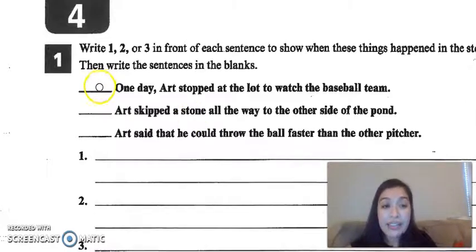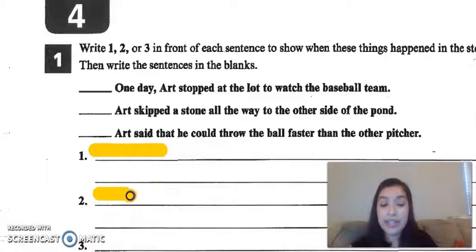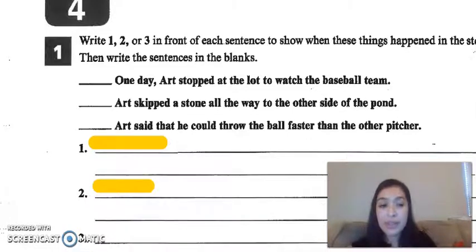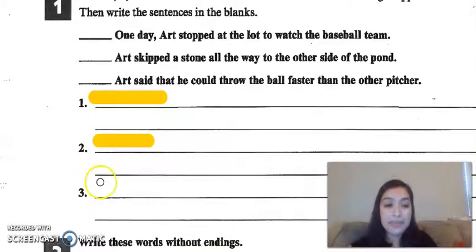Whatever sentence has a one next to it, you're going to write that sentence right here in lines one. Whatever sentence has a two next to it, you're going to write it here in two. And whatever sentence happens last, let me scroll down, you write in three. Awesome. So let's go down more.